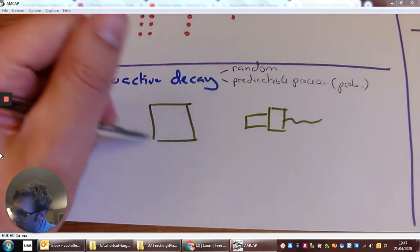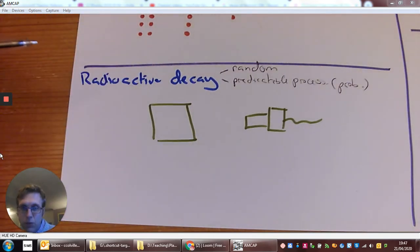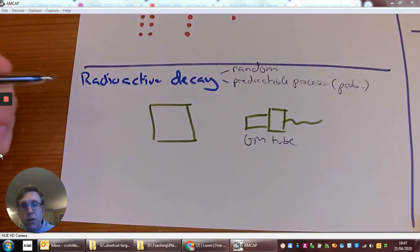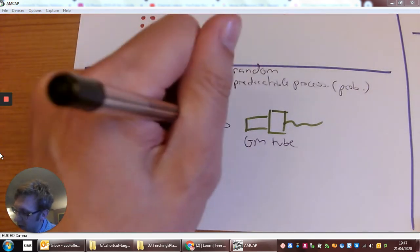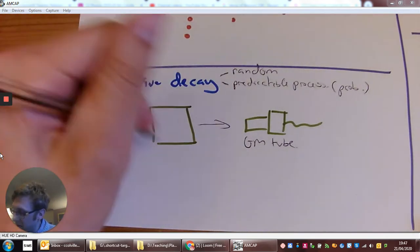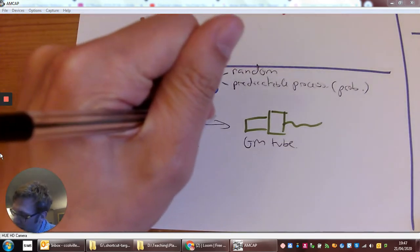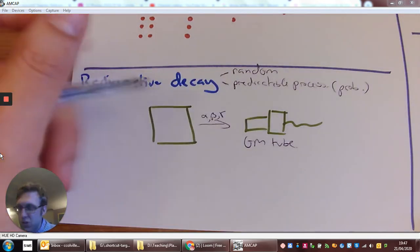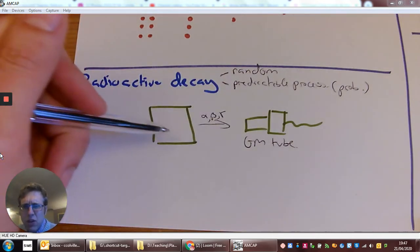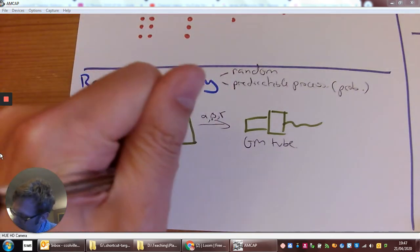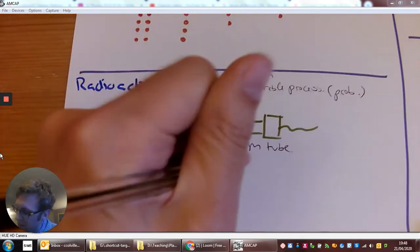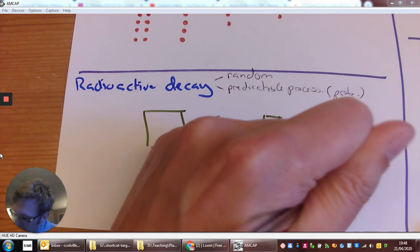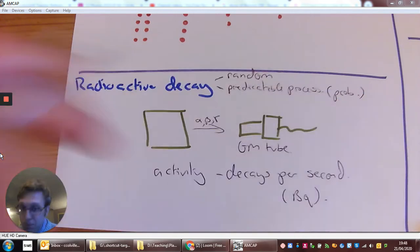So here is a box and inside it is a radioactive source. This thing here is my GM tube, a Geiger-Muller tube. What it's going to do is detect a certain number of radioactive particles that are emitted by these radioactive isotopes. So our alpha, our beta, or our gamma that's leaving will hit our GM tube. What this is going to be able to measure is not the number of particles in this box, but the activity. It's going to measure the number of decays per second. That's something we give the units of Becquerels to.